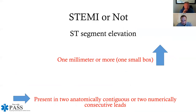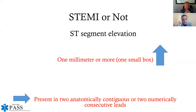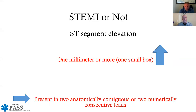To call something a STEMI, we look for ST segment elevation of one millimeter or more — one small box on EKG paper — in two or more anatomically contiguous or numerically consecutive leads. It's not just that the ST segment is elevated; it must be elevated in those two or more specific lead groupings. That's the critical part of the STEMI definition.